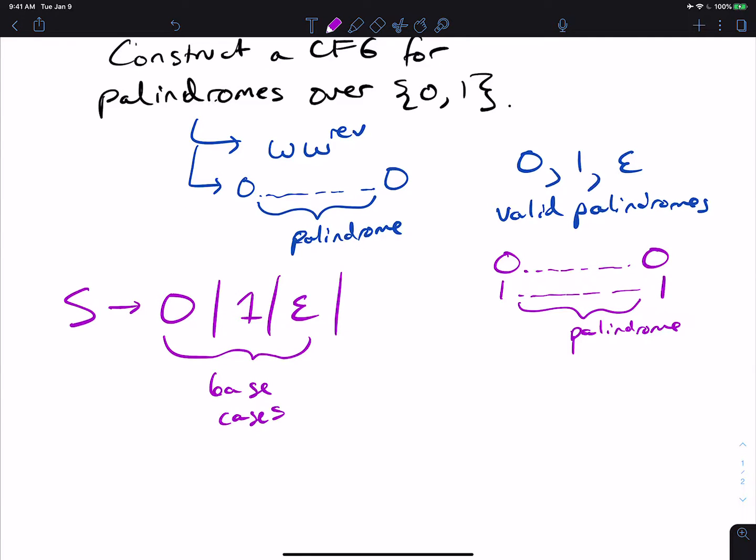So if we can assume we know how to make the middle part over here, if we know how to make this part right here in the middle, and we know how to make a 0 at the front and the end, then we know how to make the whole thing.